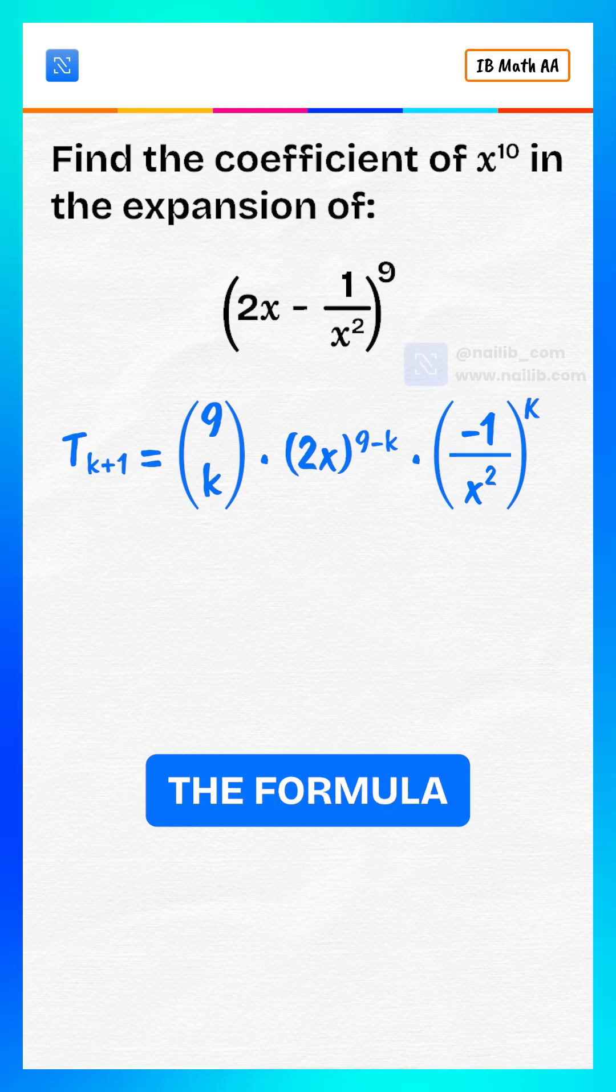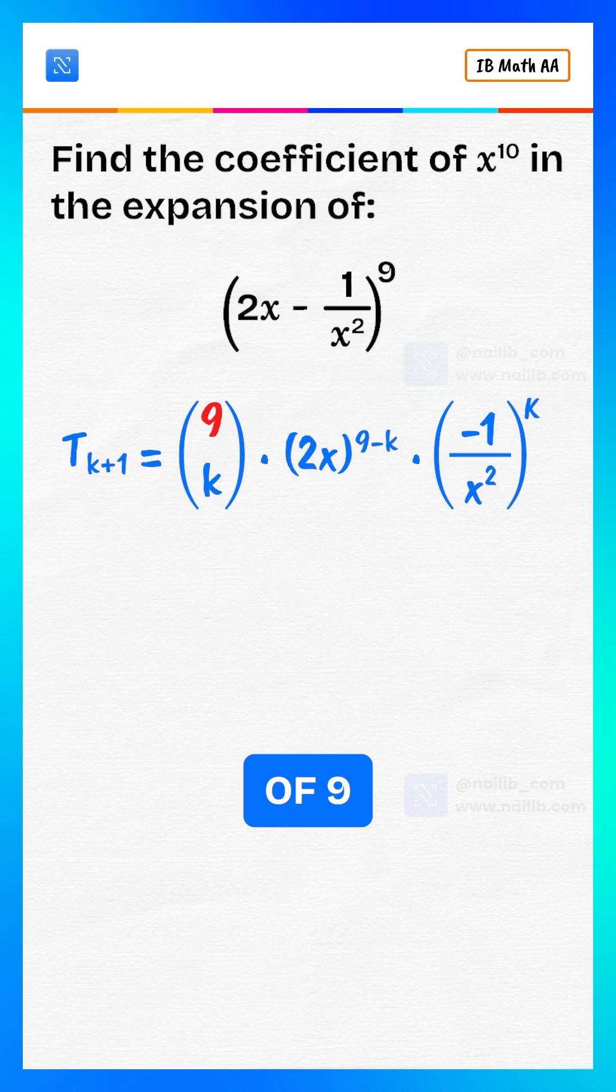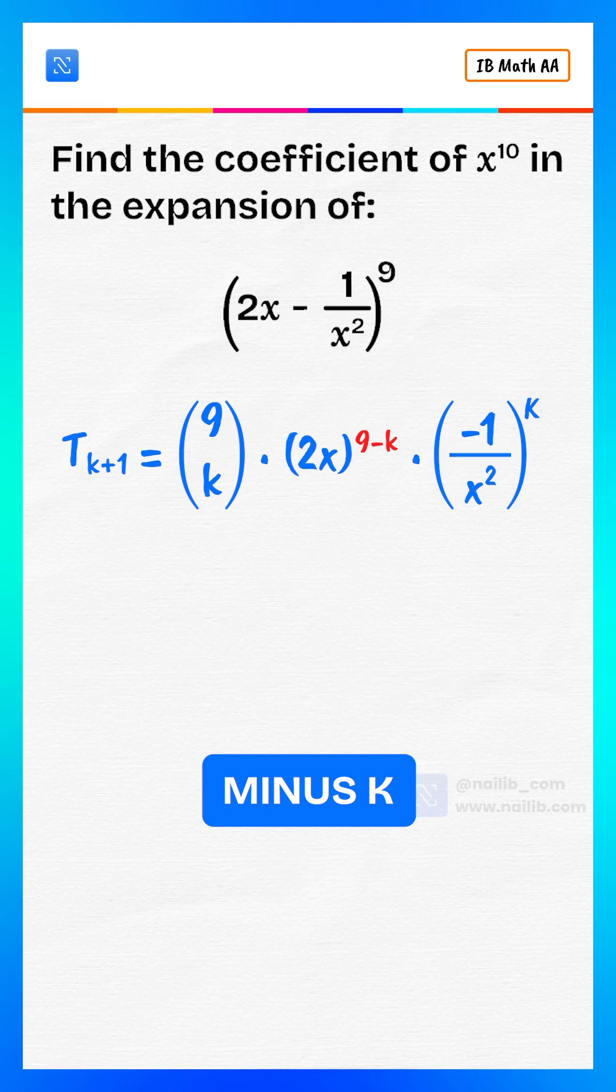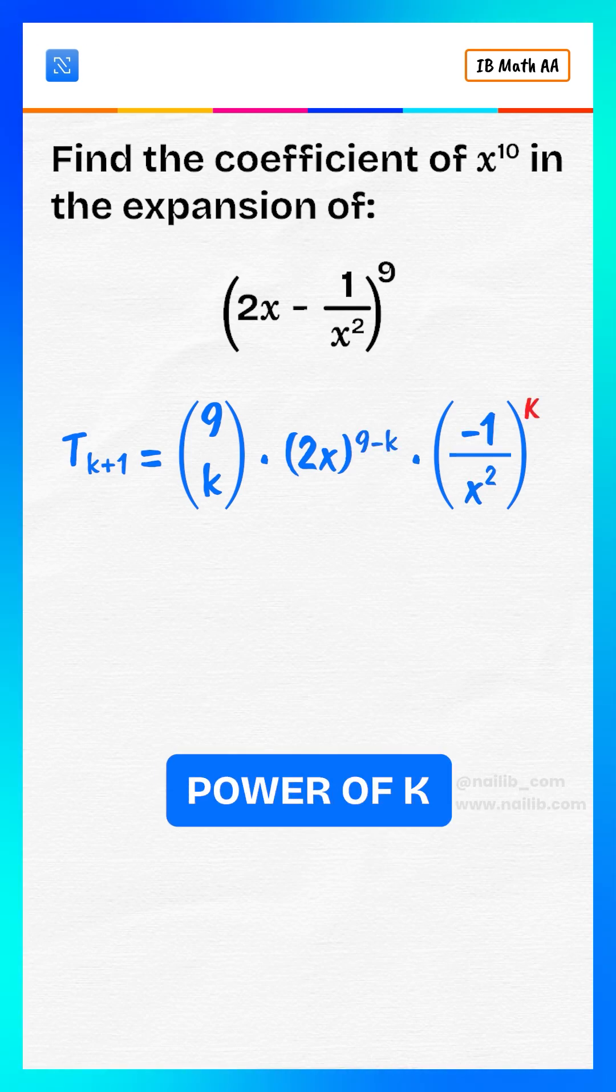Now apply the formula. T sub k plus 1 equals combination of 9 choose k, multiply by 2x to the power of 9 minus k, multiply by minus 1 divided by x squared to the power of k.